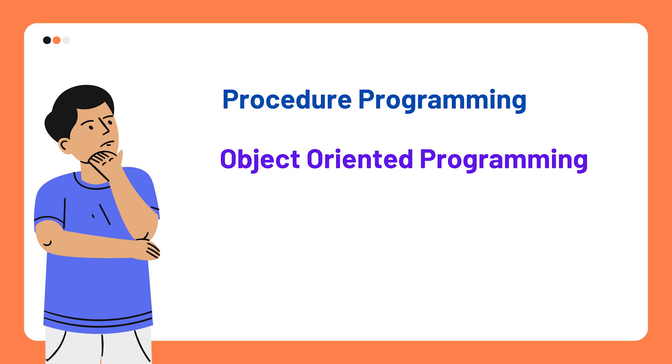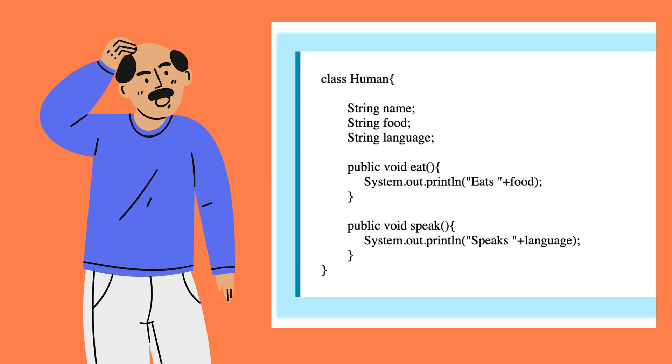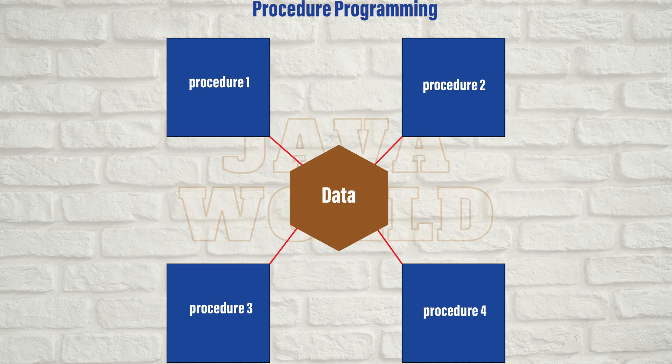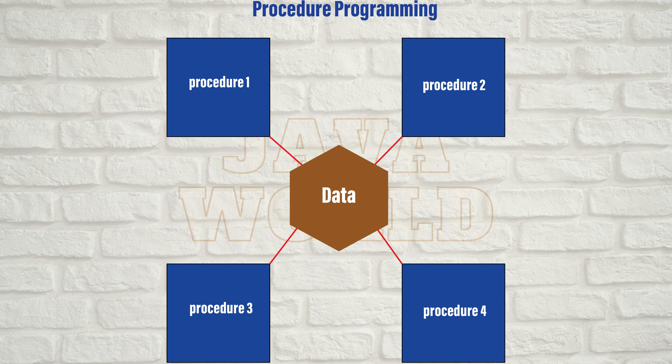Difference between procedure programming and object-oriented programming. As previously said, any program will have two parts. The first is data and the second is behavior or procedures. In procedural programming, data is separate from procedures. In certain cases, the data is global, allowing for easy modification. As a result, data access is unmanaged and unpredictable.